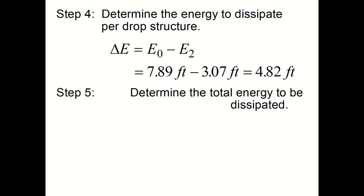Then we will determine Step 4: how much energy per drop structure has to be dissipated. So the change in energy delta E is equal to E₀ minus E₂. 7.89 feet minus 3.07 feet gives you 4.82 feet to be dissipated for each drop structure.